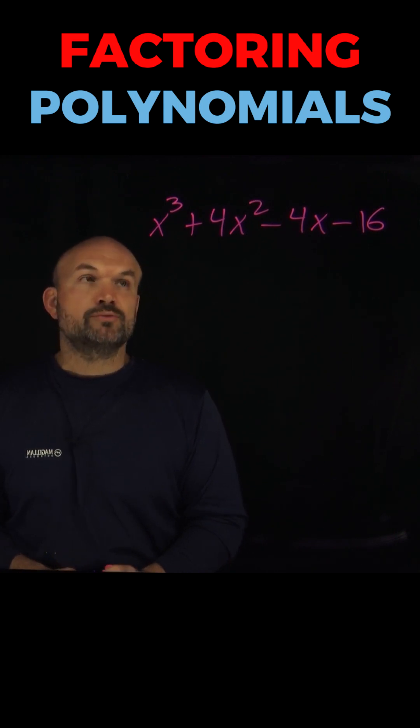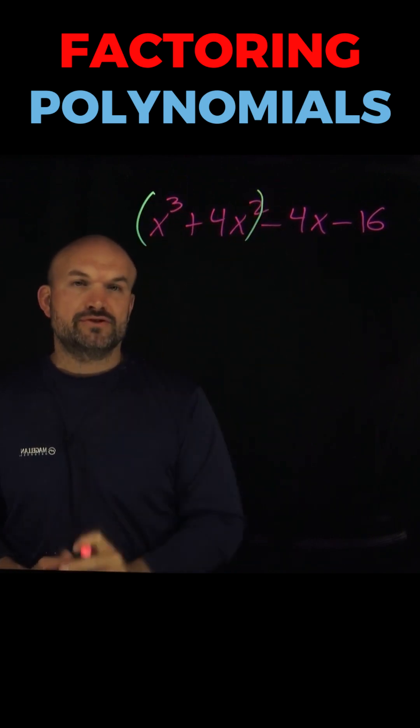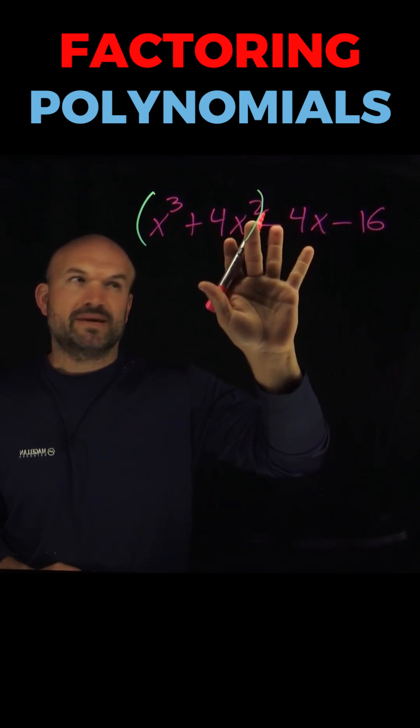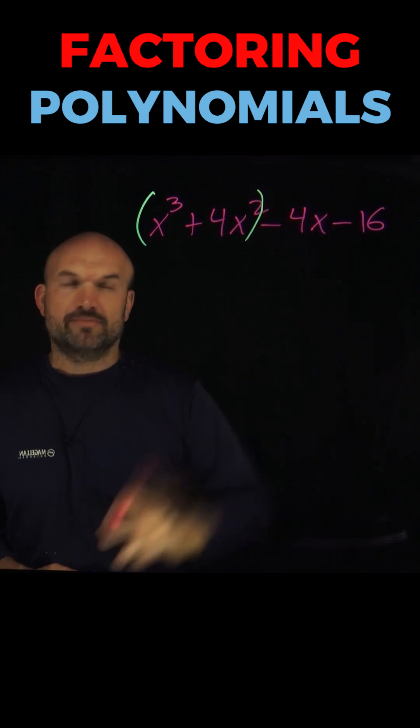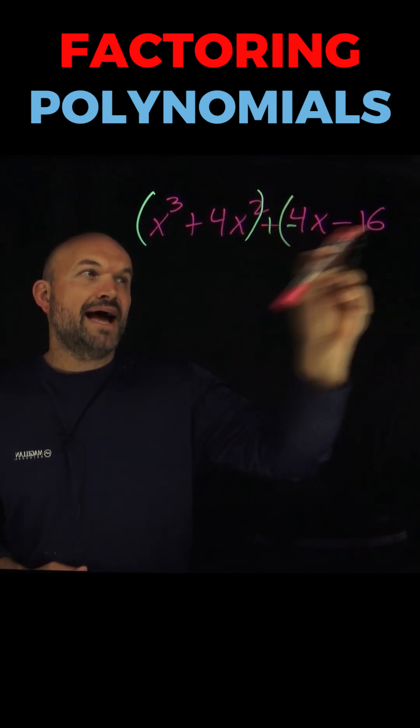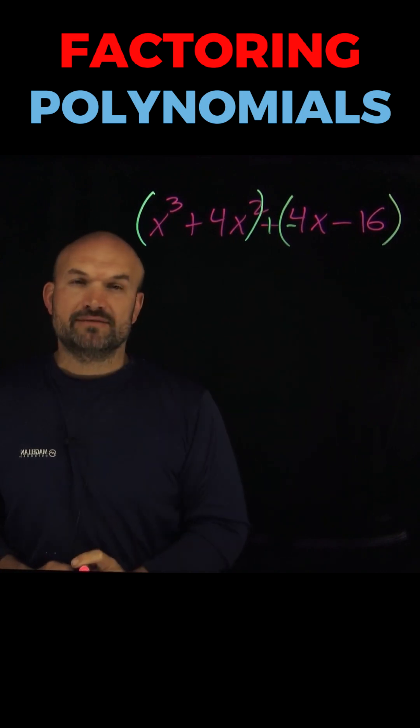To do that, we're going to group the first two terms and the last two terms. I'm going to put parentheses here to group these first two terms. Now in the last two terms, I don't want to put a parentheses here—that's going to represent multiplication—and I don't want to put a parentheses here because that's going to represent distributed property. So what I'm going to do here is change this to a plus a negative, and now I can go ahead and use my grouping symbol.